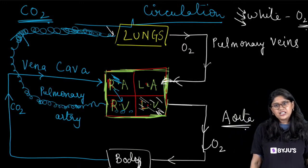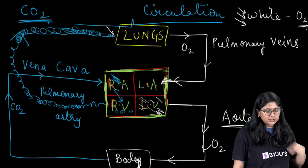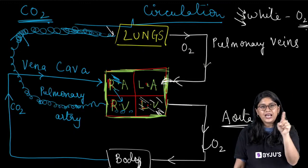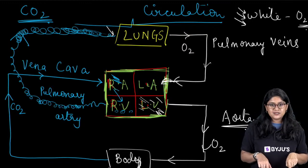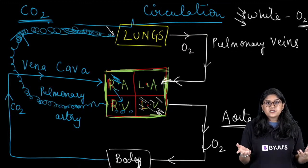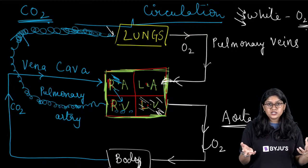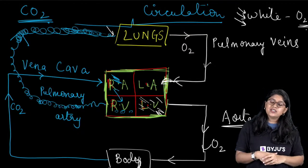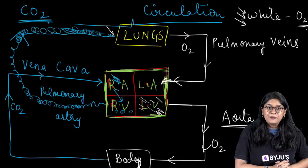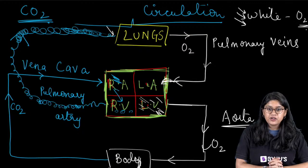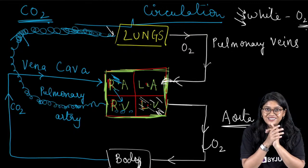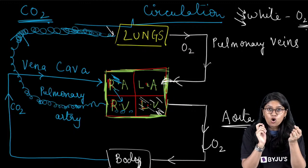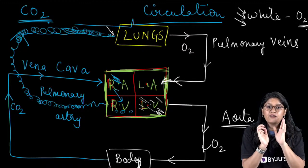The difference between circulation and double circulation: circulation is the blood moving once. In double circulation, the blood moves twice through the heart. Pulmonary artery carries carbon dioxide-rich blood from the right ventricle to the lungs. Pulmonary vein carries oxygen-rich blood from the lungs to the left atrium.